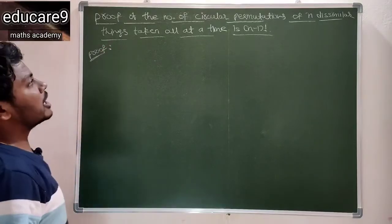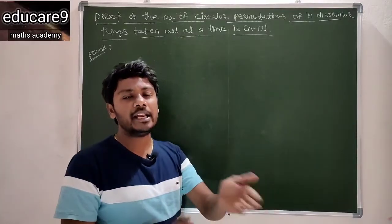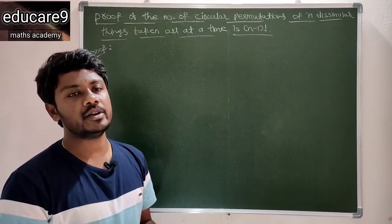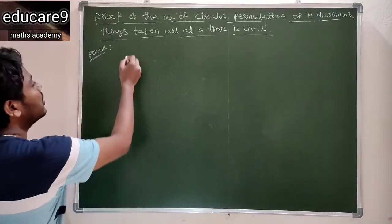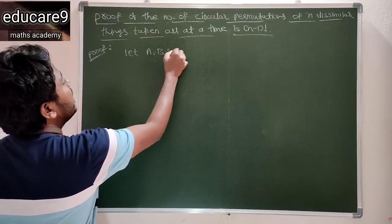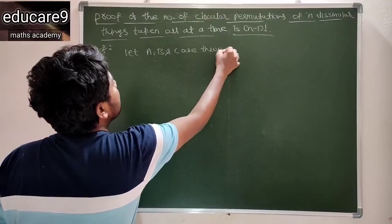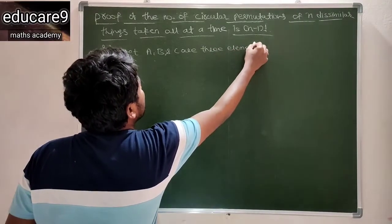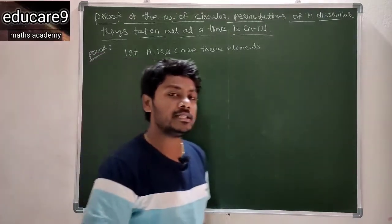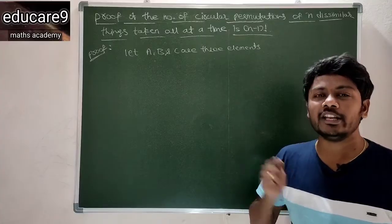Circular permutations means the arrangements of elements or numbers around a circuit is called circular permutations. Let us consider three elements: A, B, and C. You know that linear permutation is the arrangements of numbers or elements in a line.